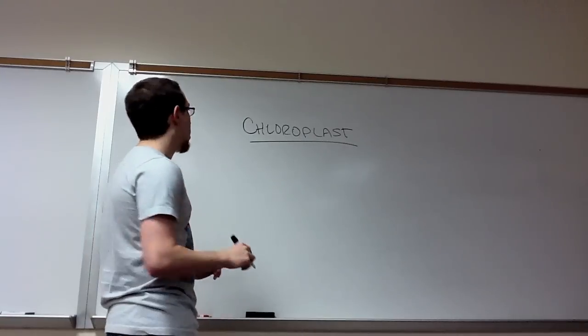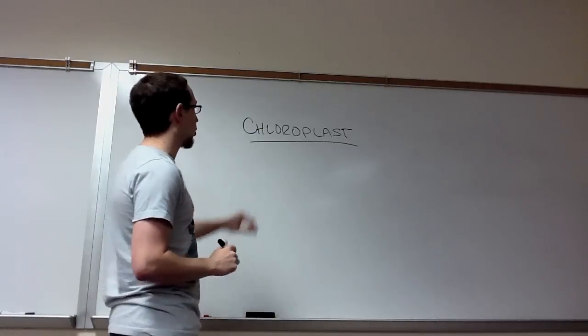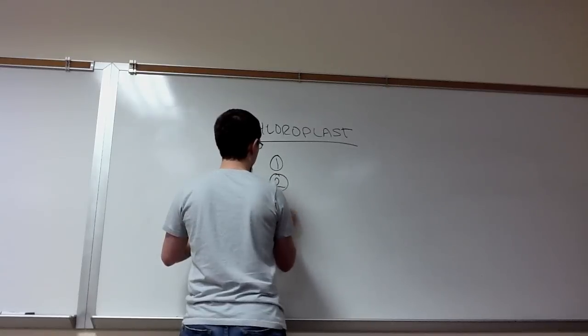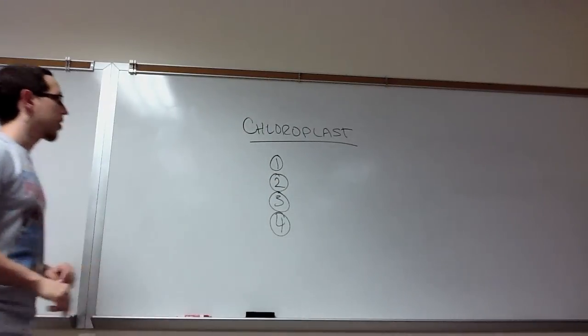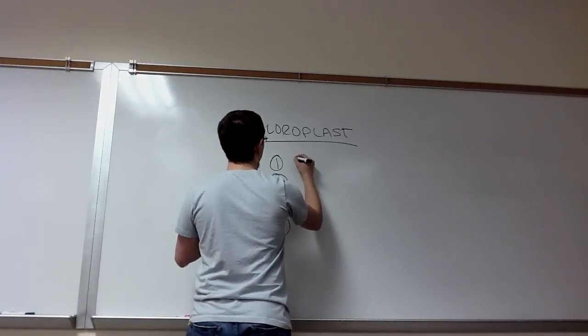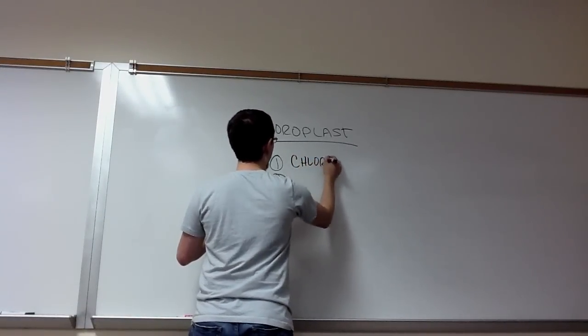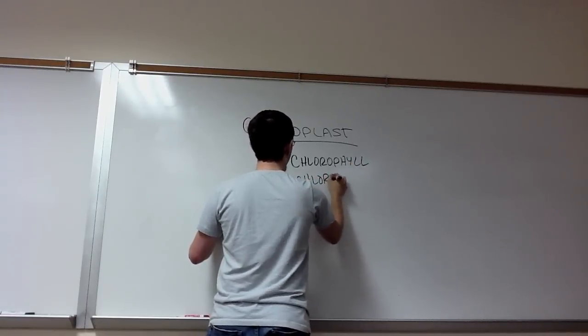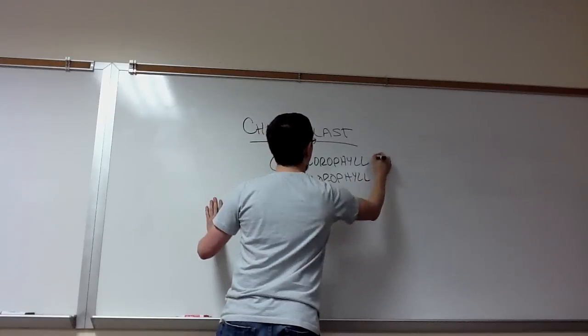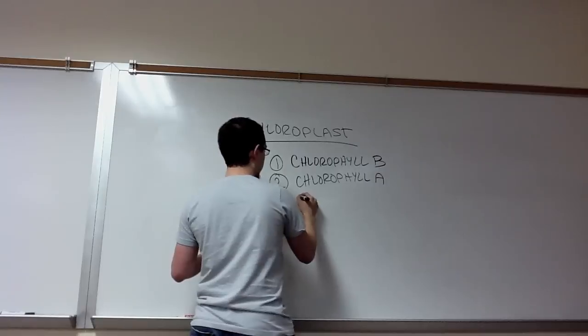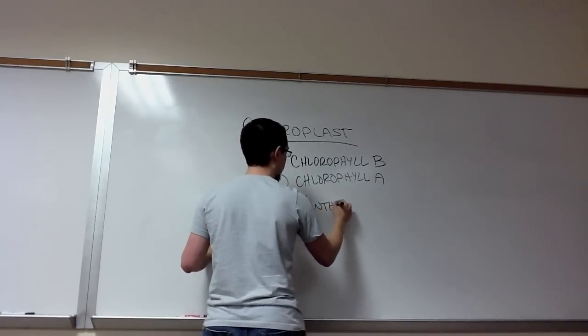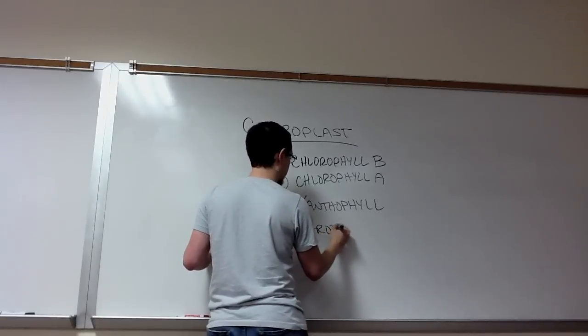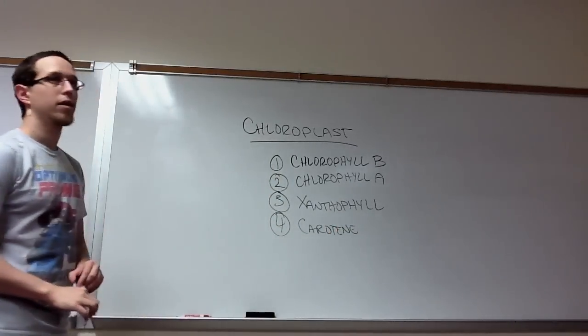We're not going to be talking extensively about those. Instead, what I want to talk about are the pigments housed in the chloroplast. There are four of them that I want to discuss: chlorophylls B and A, then the carotenoids, xanthophyll and carotene.